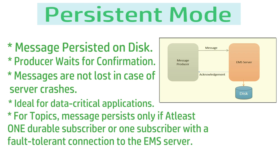An important distinction: for queues, messages are always persisted in persistent mode. For topics, a message is stored to persistent storage only if it has at least one durable subscriber, or one subscriber with a fault-tolerant connection to the EMS server. If neither condition is met, the message will not be stored to disk.